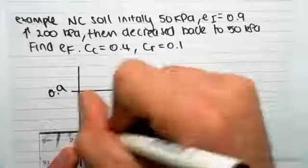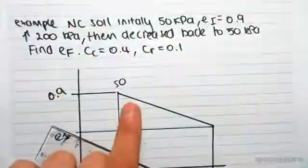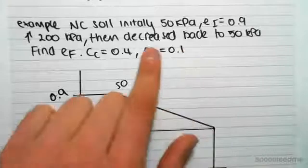We don't know the voids ratio there, so let's call that e1. And then it's said we're going to go back to 50.